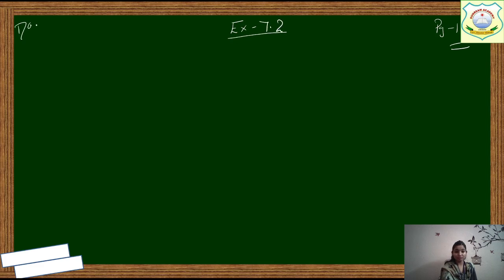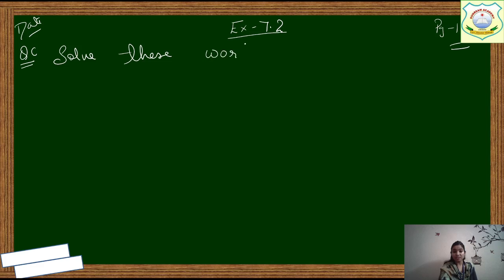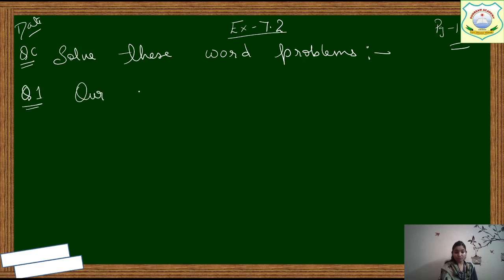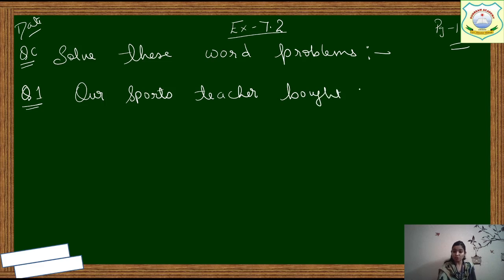Write the date and then the question. Question number C we are doing, that is 'Solve these word problems.' Note it down from the book. After that you have to note down Question number 1. Our sports teacher bought — what does 'bought' mean? Kharidna. Our sports teacher bought.